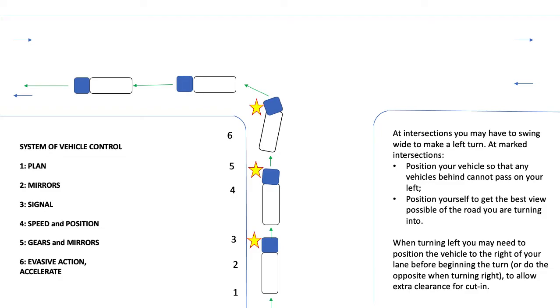Step four, lower your speed — coming off the accelerator, working down the gears, checking the positioning as well, giving way to the vehicles on the T-section, and then, if and when clear, moving around to the left.